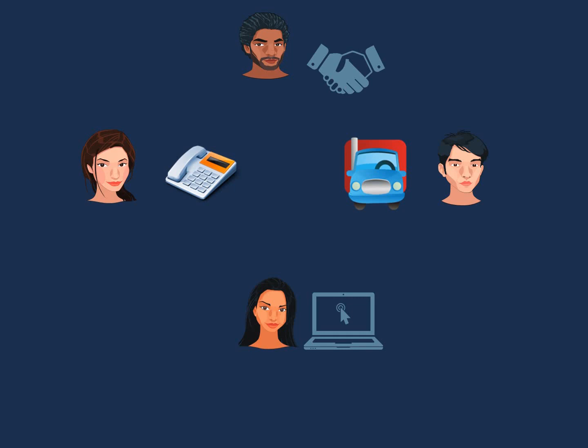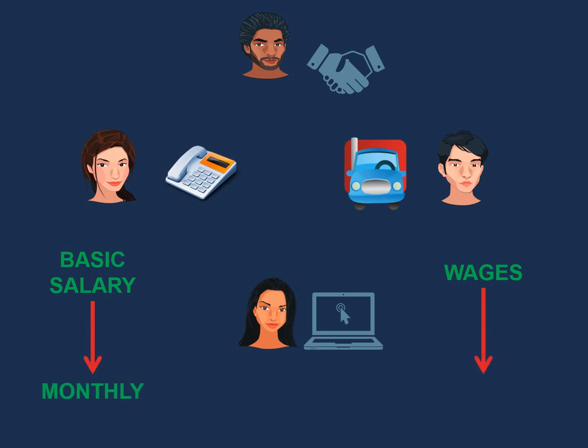There's a difference between employees that earn a basic salary and employees that earn wages. Employees that earn a basic salary are paid monthly, while employees that earn wages are paid weekly. All these employees, before they get paid, get issued a payslip. Let's have a look at how a payslip looks like.